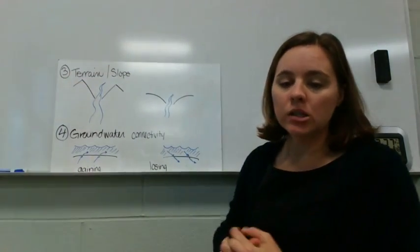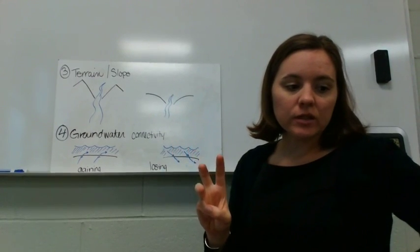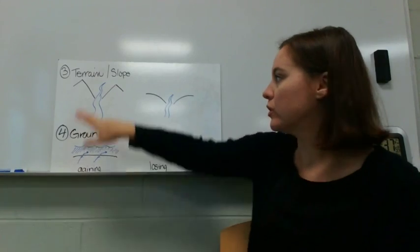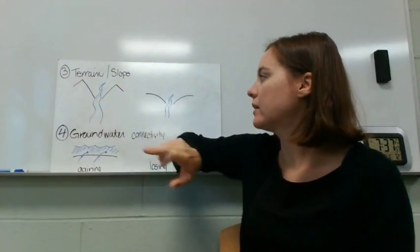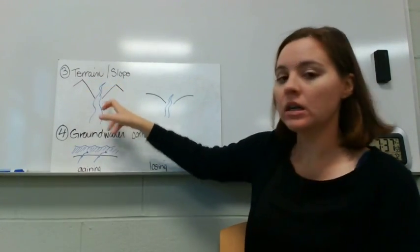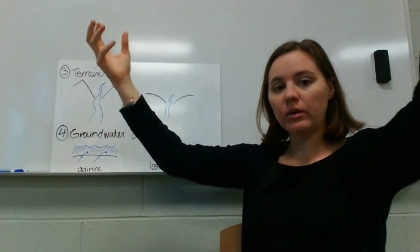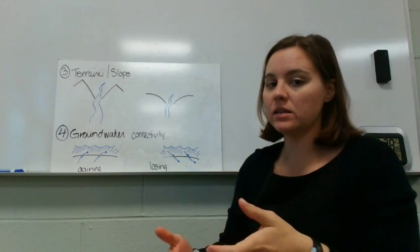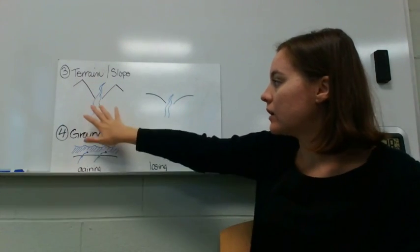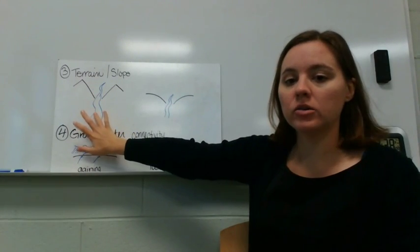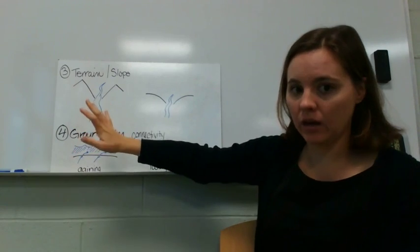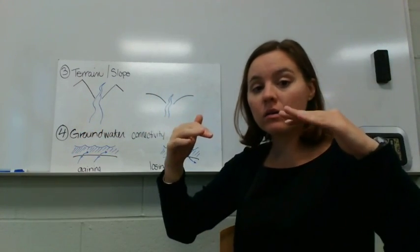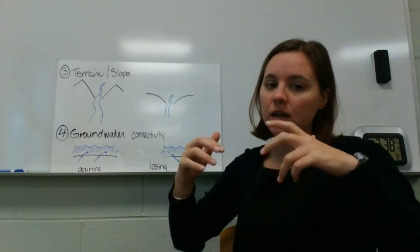Okay, so the third thing that affects surface water flow is the slope of the ground or terrain. So if we have really steep mountains, obviously that water is going to be influenced more by gravity and it's going to run down those mountains really fast. And we're going to get a larger volume in our surface water, so in our stream or lake.